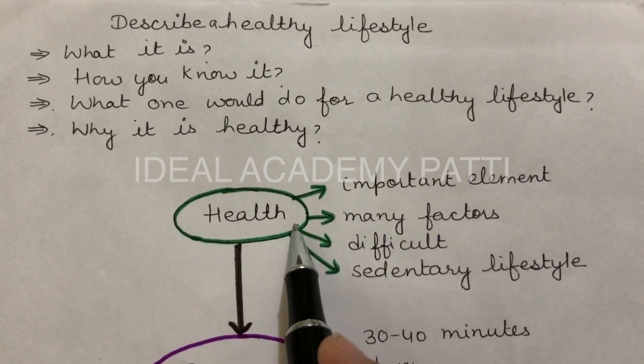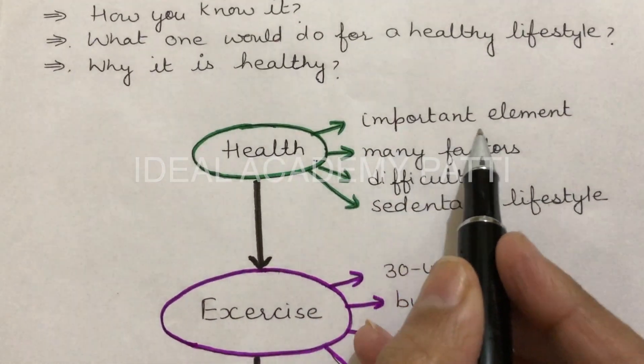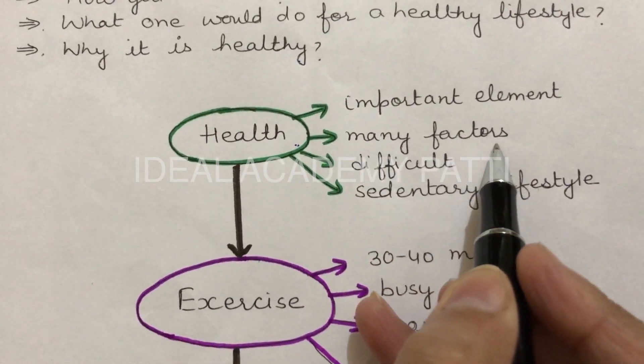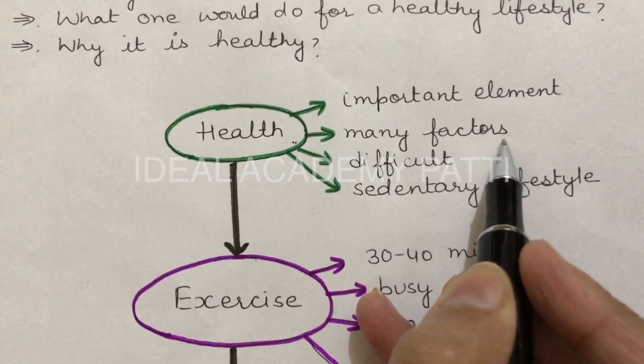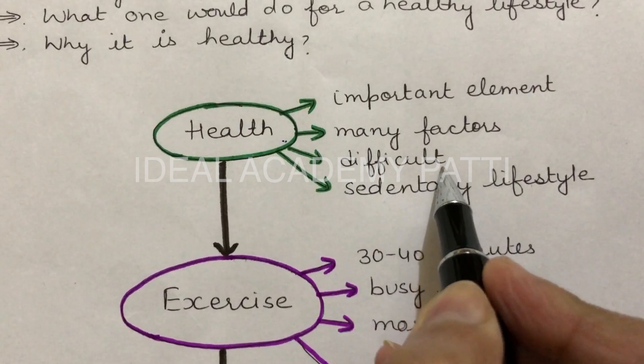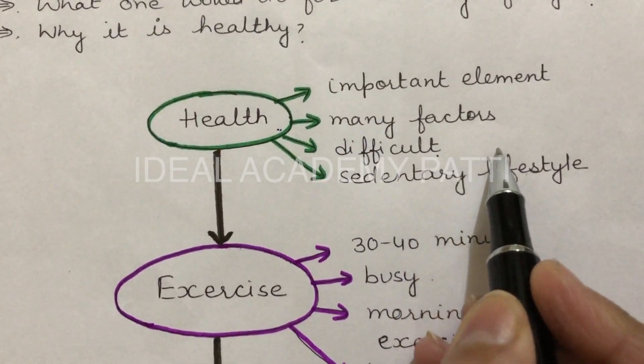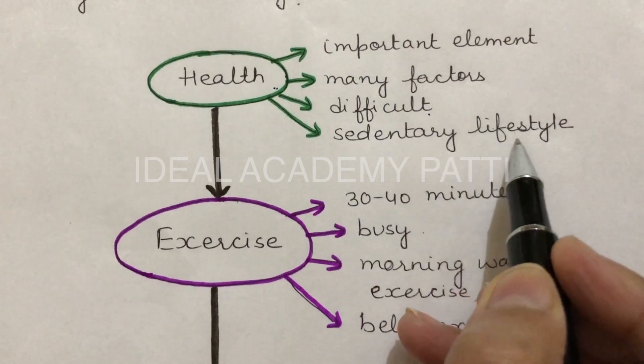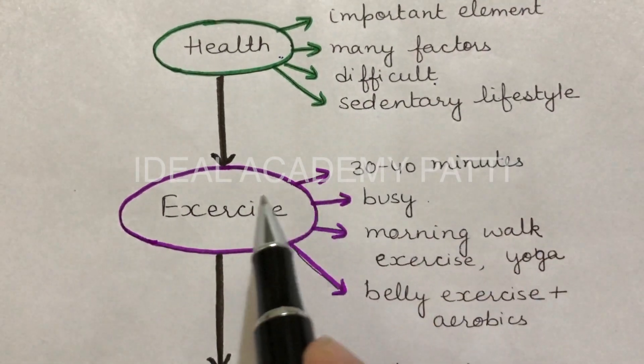Now we are going to start this topic. It is well said that health is wealth. Actually, health is very important element of human life and depends upon number of factors such as proper diet and exercise. In the modern world it is very difficult to have healthy lifestyle because people are highly dependent upon technology and machines and they are having sedentary lifestyle.